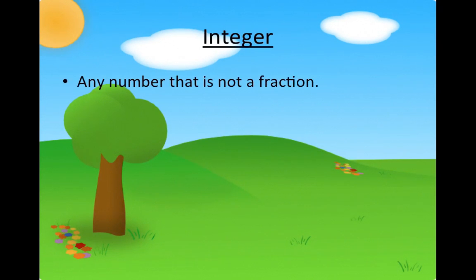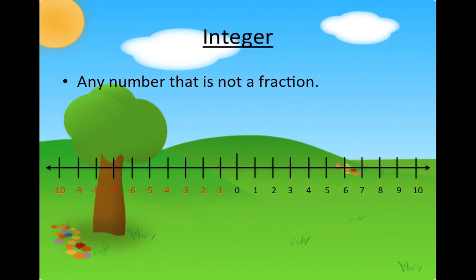Integer. An integer is any number that is not a fraction. In this number line, you can see that the negative counting numbers, 0, and the positive counting numbers are integers.